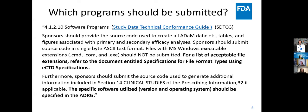Sponsors should provide the source code used to create all ADAM data sets, tables, and figures associated with primary and secondary efficacy analyses. Sponsors should submit source code in single-byte ASCII text format. Files with Windows executable extensions should not be submitted. For a list of acceptable file types, refer to the document entitled 'Specifications for File Format Types using eCTD Specifications.' Sponsors should also submit the source code used to generate additional information included essentially in the labeling. The specific software utilized, version, and operating system should be specified in the ADRG — the Analysis Data Reviewer's Guide.